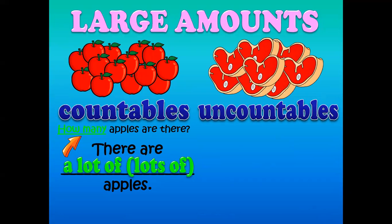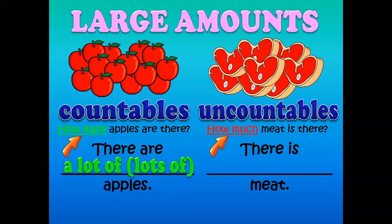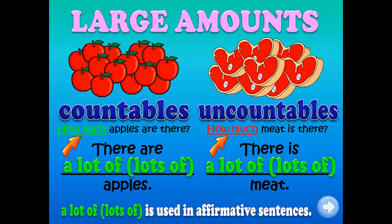Uncountables never have a plural form. For example: rice, oil, grass, hair, meat. For those, you use 'how much.' How much meat is there? How much rice is there? How much oil do you have? How much water do you drink? And the answer is: there is a lot of meat. 'A lot of' is used with both countable and uncountable nouns, because it means 'much of anything.' Remember: a lot of can be used with countable and uncountable nouns.